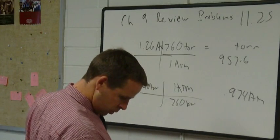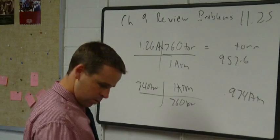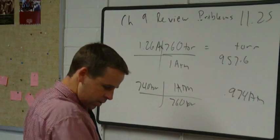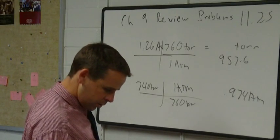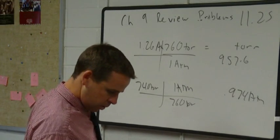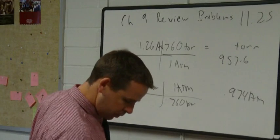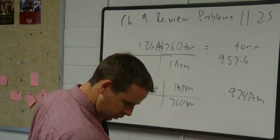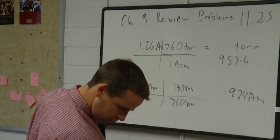Part c: 738 torr to millimeters of mercury. Since 1 torr equals 1 millimeter of mercury, 738 torr is simply 738 millimeters of mercury. Double check problem 1125 — that's correct.